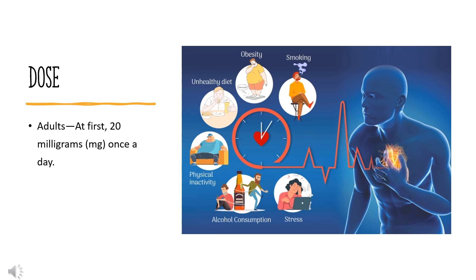Children 6 to 16 years of age weighing 35 kg or more: dose is based on body weight and must be determined by your doctor; the dose is usually 20 to 40 mg once a day. Children 6 to 16 years of age weighing at least 20 kg and less than 35 kg: the dose is usually 10 to 20 mg once a day. If the child cannot swallow the tablets, an oral suspension is recommended. Children 1 to 5 years of age: use and dose must be determined by your doctor. Children younger than 1 year of age: use is not recommended.